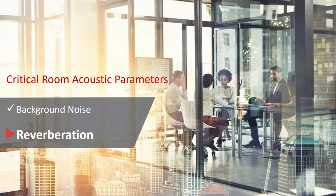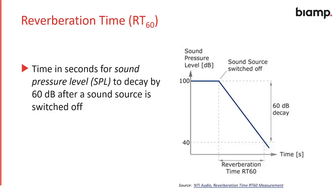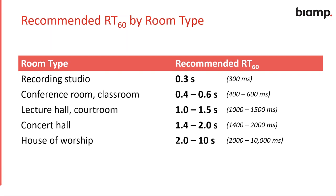The other critical acoustic parameter for good audio quality is reverberation. Reverberation is defined as the time in seconds for sound pressure level to decay by 60 dB — that's RT60. In general it defines how long it takes for sounds to decay by a certain amount in a room. 60 dB is a pretty substantial decay — if you have a background noise of 40 dBA in a room, that would require a sound source of at least 100 dB to actually capture a full RT60 measurement.